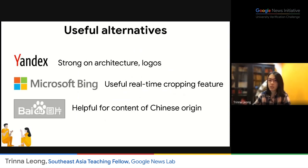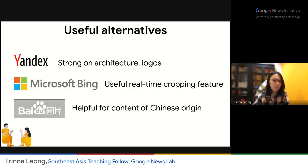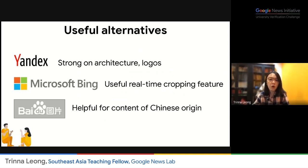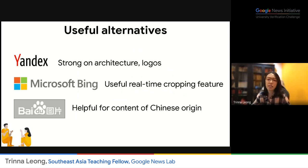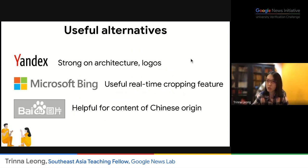If you don't find any results on Google, that's fine, because there are other search engines. Yandex is a Russian search engine that's very good with logos and architecture — especially important when you have no other landmarks to rely on. Microsoft Bing lets you use a real-time cropping feature to zoom in onto a particular aspect of the photo you want to reverse image search. And Baidu is helpful for content of Chinese origin — viral content that may not appear in other search engines could crop up on Baidu.